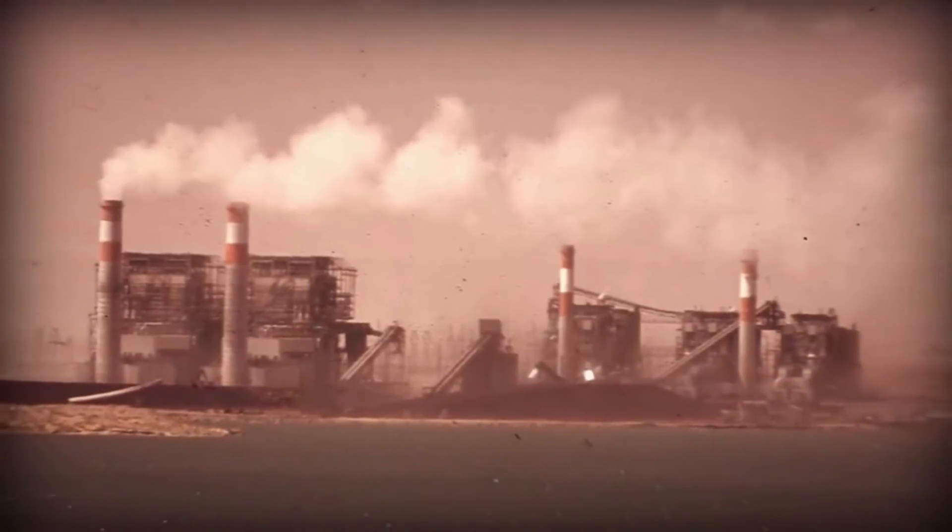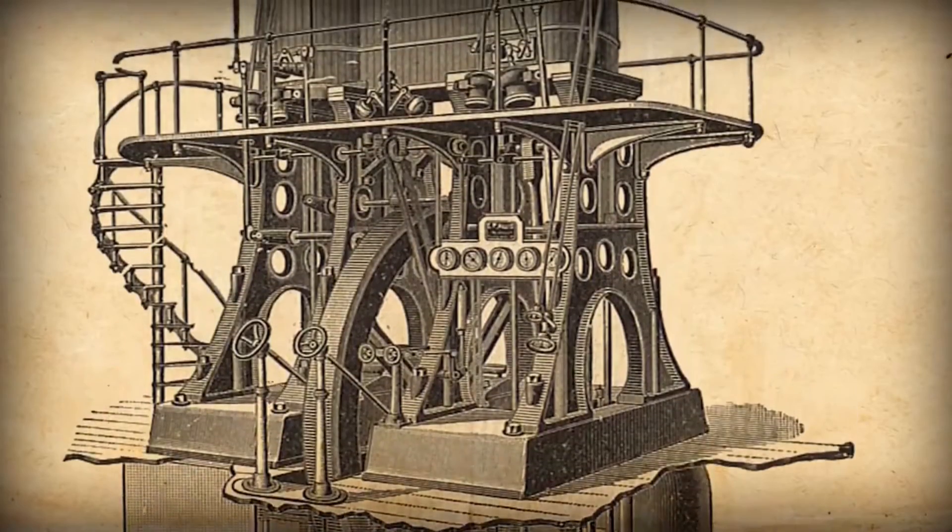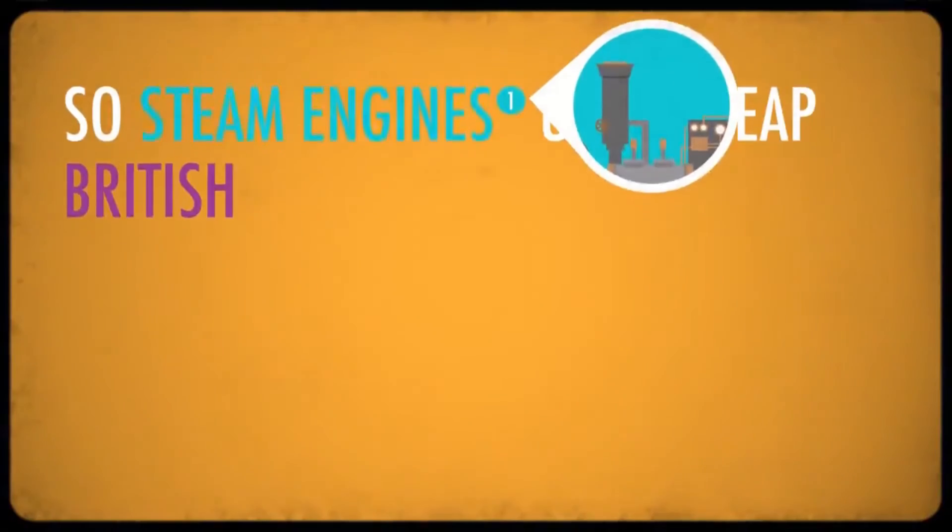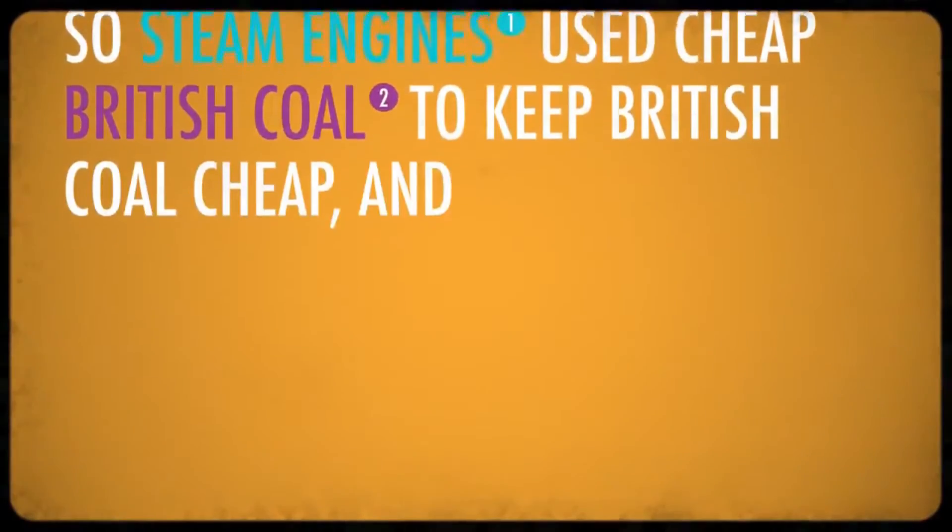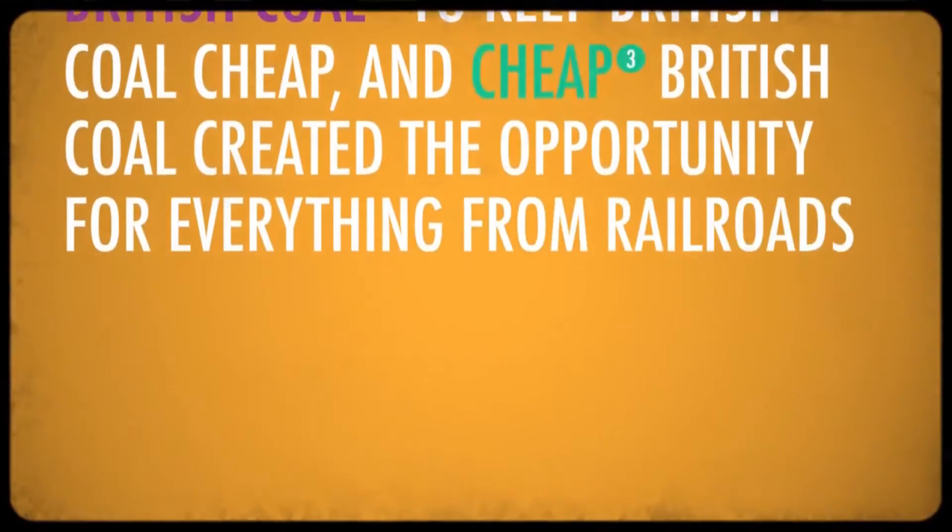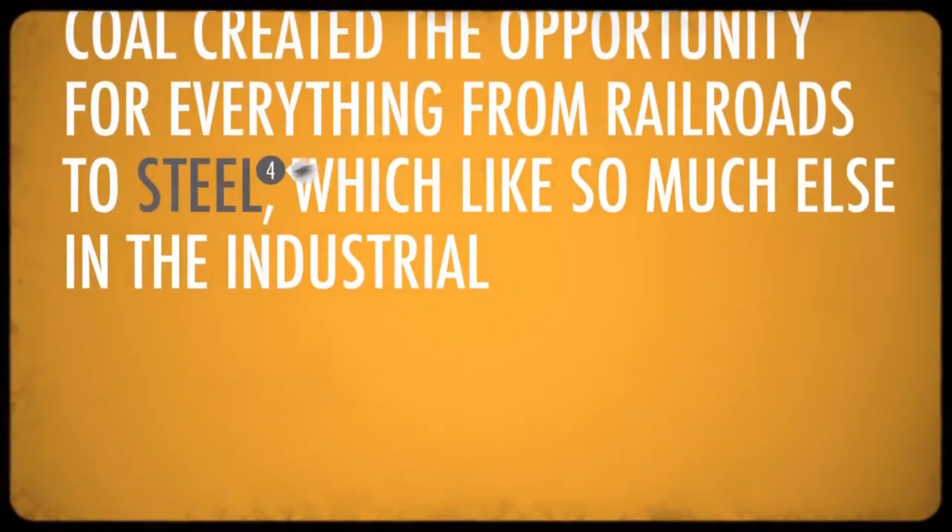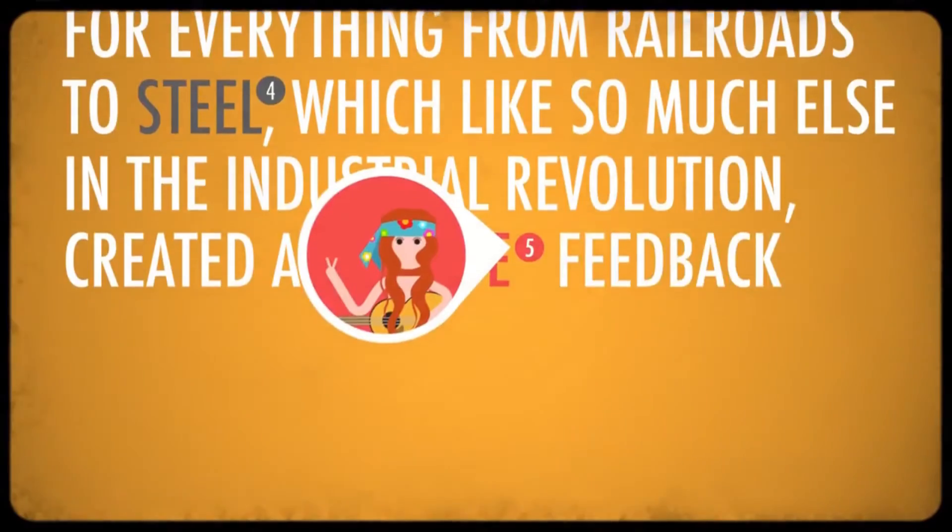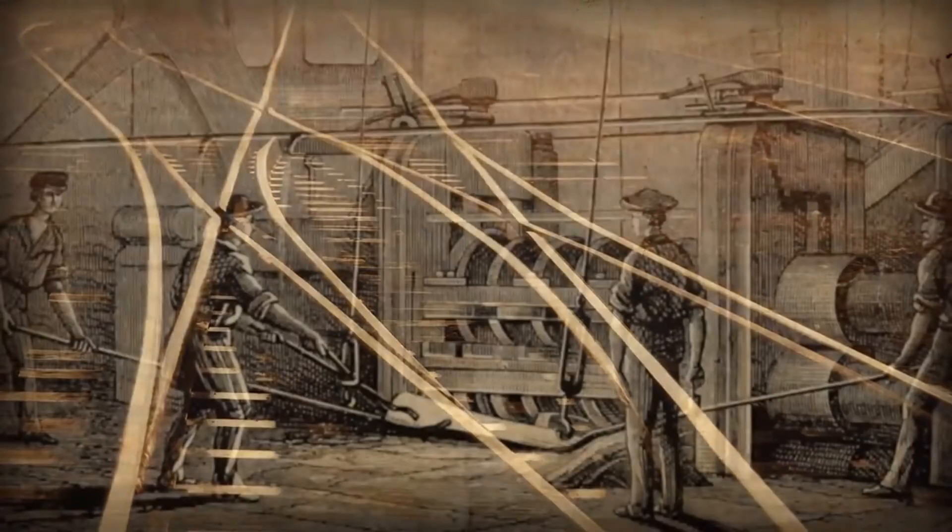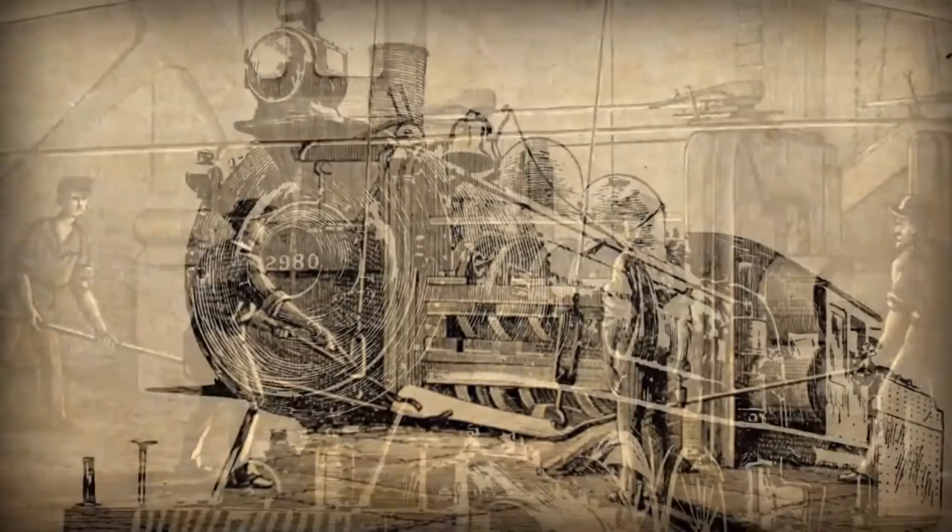is that the coal mines flooded all the time. But because there was all this incentive to get more coal out of the ground, steam engines were invented to pump water out of the mines. And because those early steam engines were super inefficient, they needed a cheap and abundant source of fuel in order to work, namely coal, which meant they were much more useful to the British than anyone else. So steam engines used cheap British coal to keep British coal cheap, and cheap British coal created the opportunity for everything from railroads to steel, which created a positive feedback loop. Because they run on rails, railroads need steel, and because it is rather heavy, steel needs railroads.